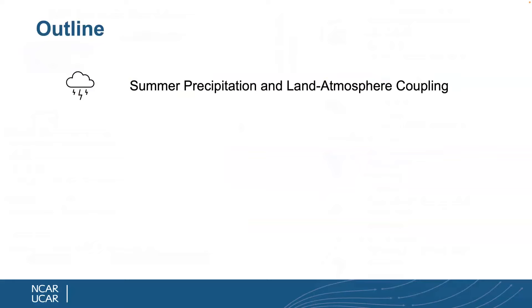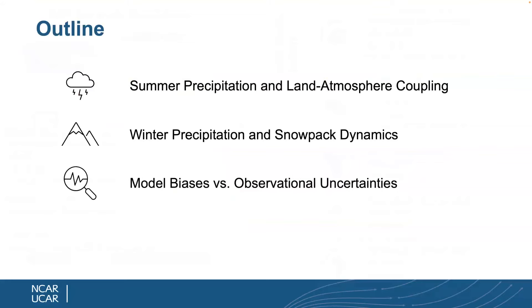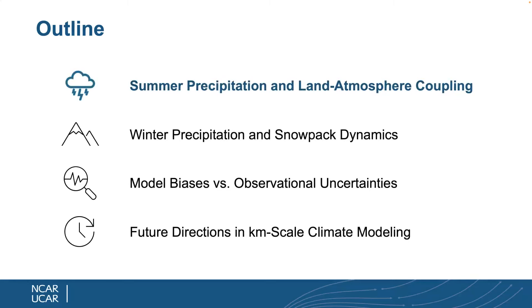I structured this talk in four main elements: first, summer precipitation and land-atmosphere coupling; second, orographic precipitation in winter in the western US; third, the issue of model biases versus observational uncertainties; and lastly, where the future might be for kilometer-scale modeling applications.